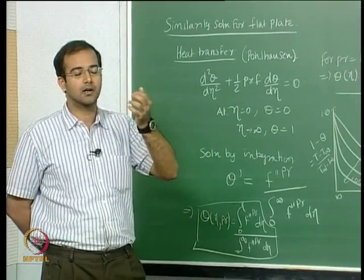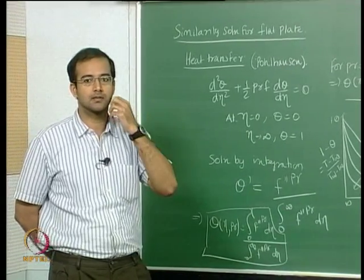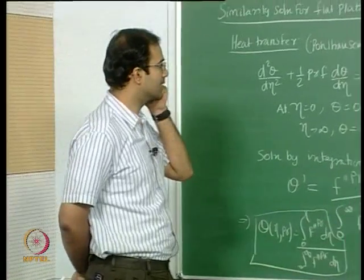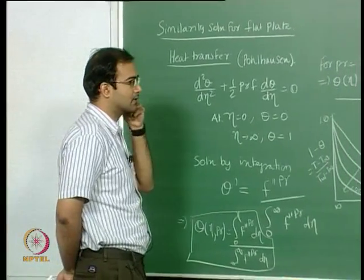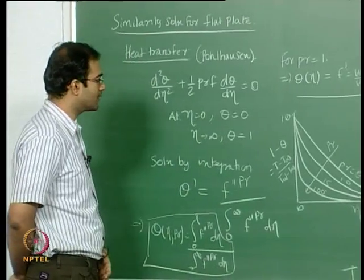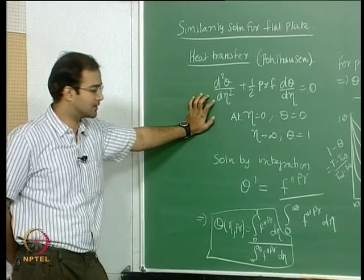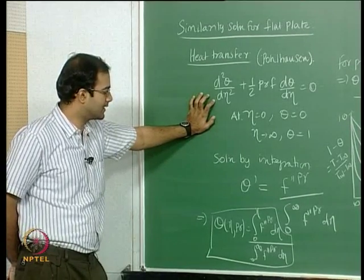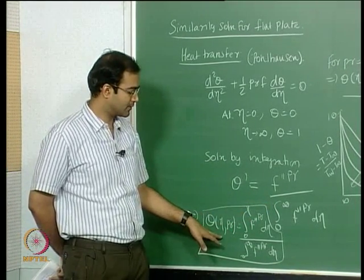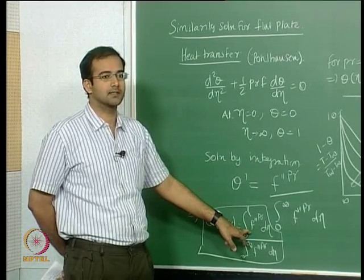Pohlhausen got the idea that if for Prandtl number equal to 1 they have the same solution, then for other Prandtl numbers there should be some kind of similarity solution possible. He intuitively substituted the same similarity variable used for the velocity boundary layer and found that this falls into the category of similarity solutions. By direct integration you can reach this particular step, where you need f from the solution to the velocity similarity.